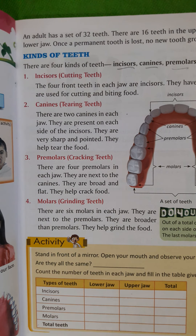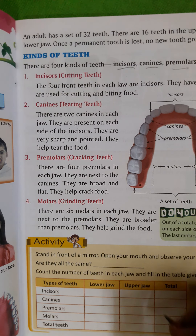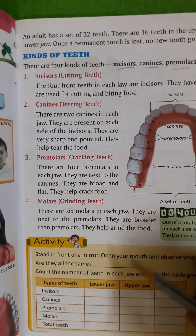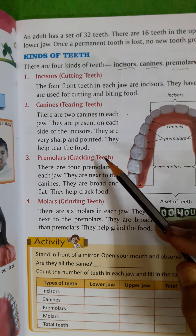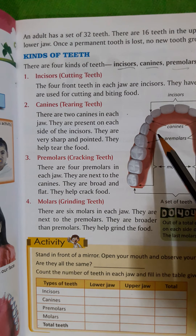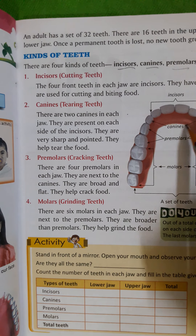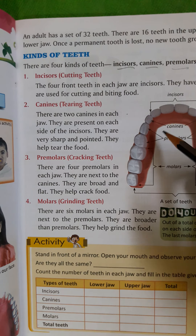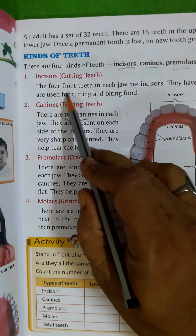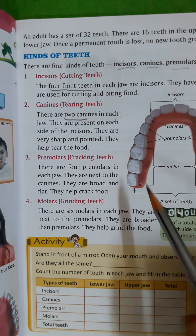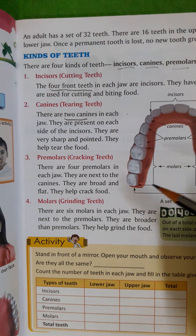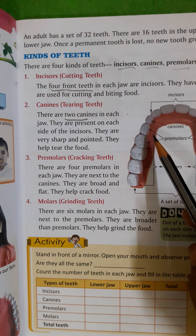The next one is the canine — the tearing teeth. There are two canines in each jaw, present on each side of the incisor. They are very sharp and pointed and help in tearing the food. You can see the two canines on each side — so we have four front teeth and two canine teeth that help us to tear.